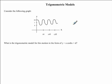In this mini clip, we will be discussing trigonometric models as we answer this question here. We are asked to consider this following graph. We are then asked to find the trigonometric model for this motion in the form of y equals a times cos of bx plus d.